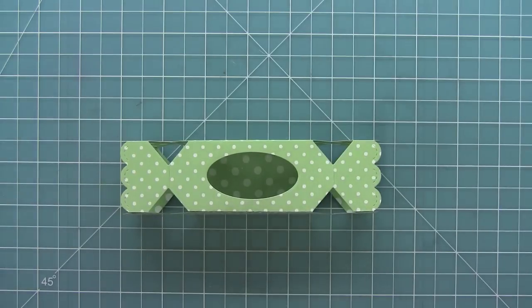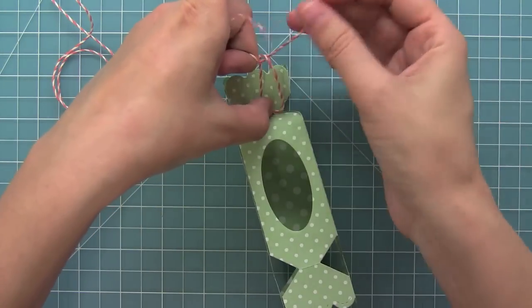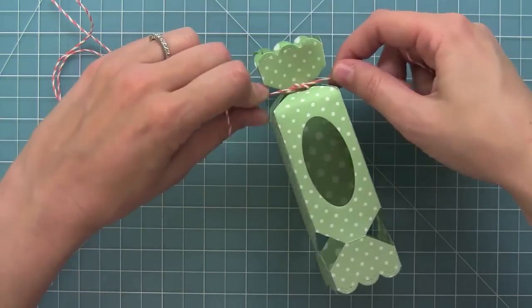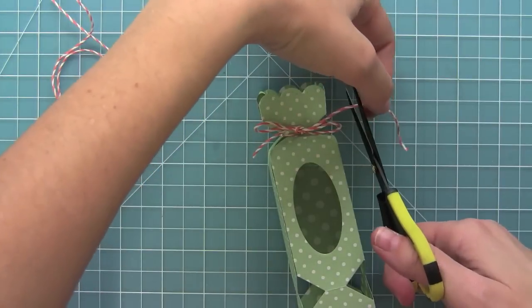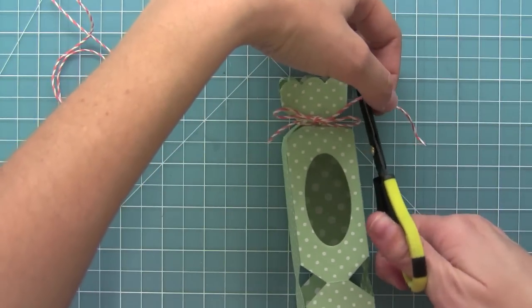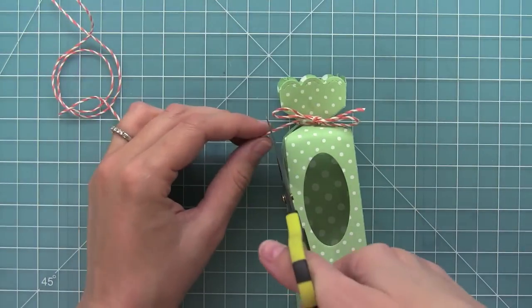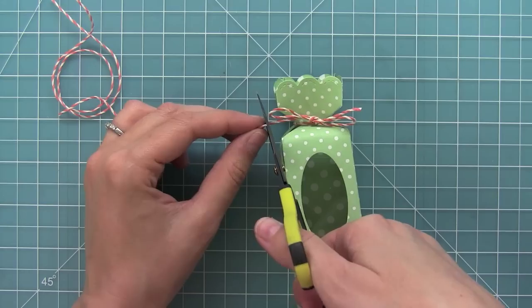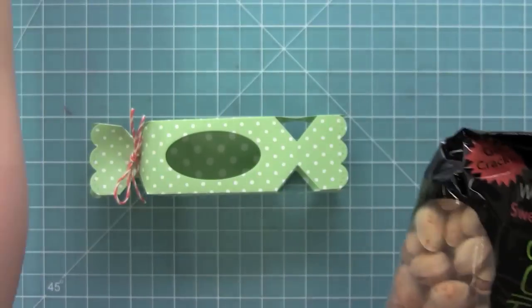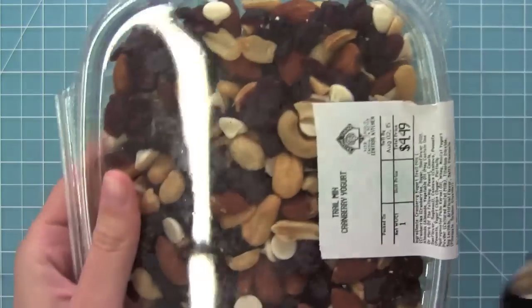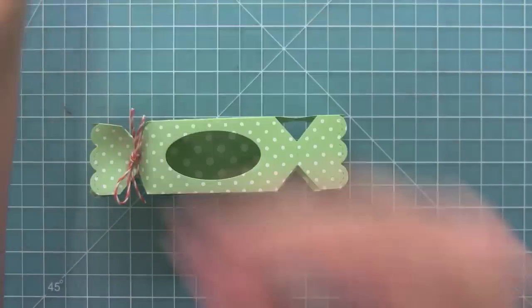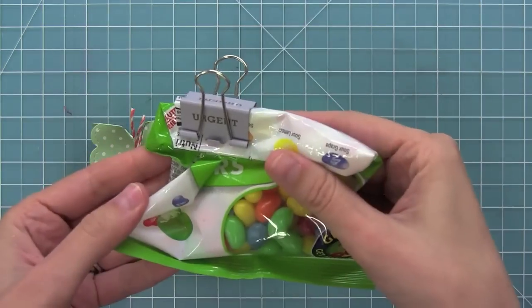Now I'm going to go ahead and tie my little double knot there at the end of my treat box, and then it's ready to be filled with treats inside. I'm going to put some jelly beans, but you could do pistachios or trail mix or any other kind of fun treats that you could think of.